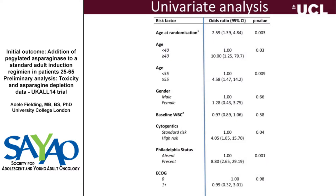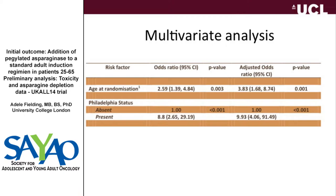In a univariate analysis, we tried to look at what factors were responsible for this toxicity. The main thing that emerged was older age — being over the age of 40, especially, and being over 55 was even worse. There was a correlation with high-risk cytogenetics, and in particular a very strong correlation with the presence of the Philadelphia chromosome. In a multivariate analysis, the two things that came out were older age and Philadelphia status, which were independently predictive of toxicity.